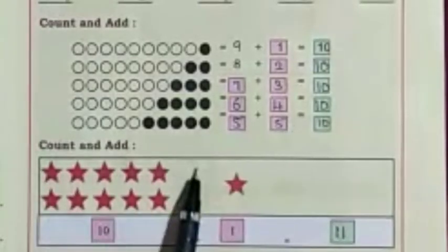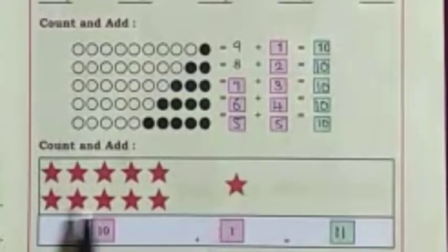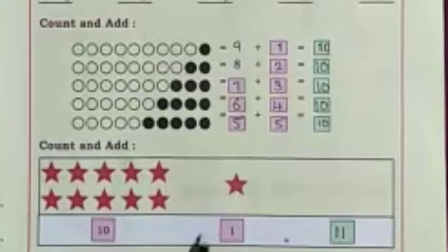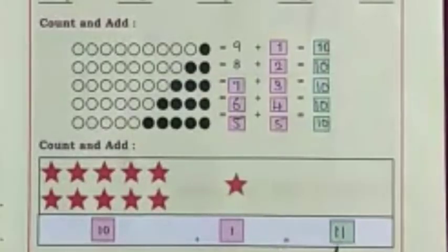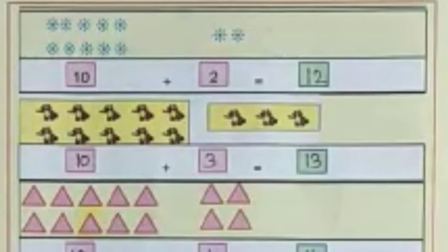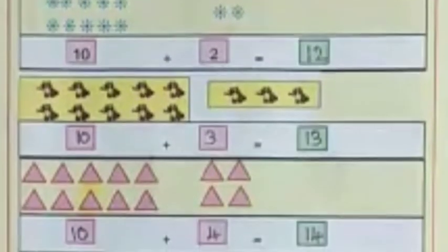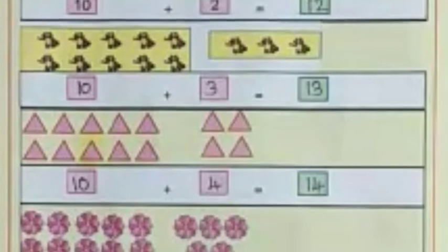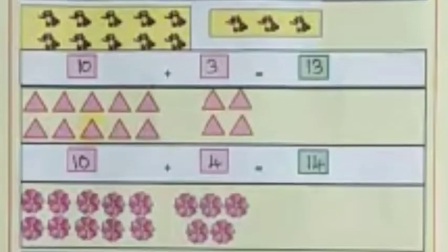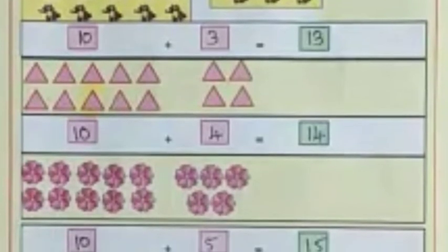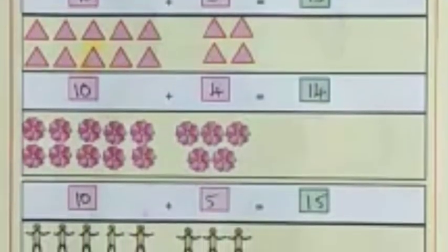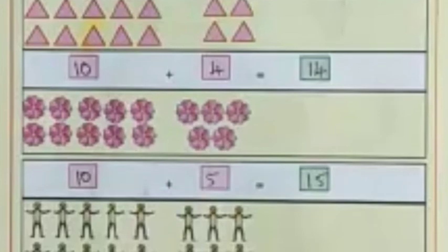Now we will count and add the stars. How many stars are here? 10 plus 1 is equal to 11. 10 flowers plus 2 flowers is equal to 12 flowers. 10 flowers plus 5 flowers is equal to 15 flowers.